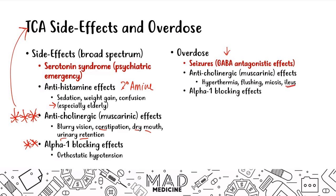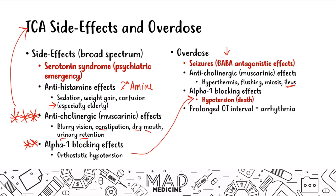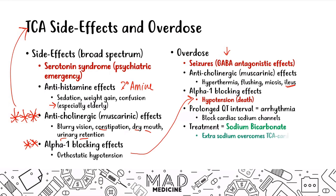Ileus is a lack of bowel movement. Alpha-1 blockade can lead to hypotension, which can be fatal. TCAs can also cause prolonged QT intervals, which can lead to arrhythmias, because TCAs block cardiac sodium channels. The treatment for a TCA overdose is sodium bicarbonate — the extra sodium overcomes the TCA's cardiac blockade of the sodium channel, allowing normal cardiac activity to resume.